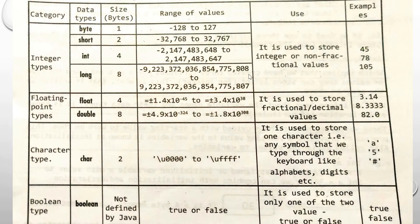Looking at the data type table: if you declare any variable with int data type, it occupies 4 bytes of space in memory. The range of values you can assign goes from a large negative to a large positive number, because integer includes all negative as well as positive numbers. This is the range of integer.